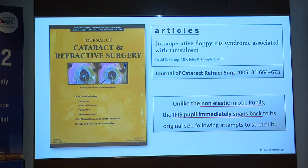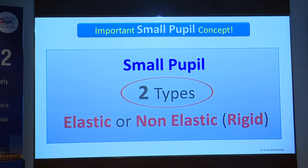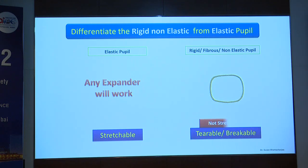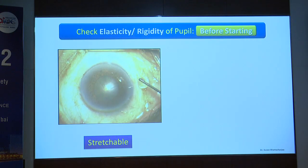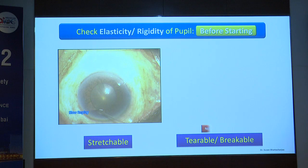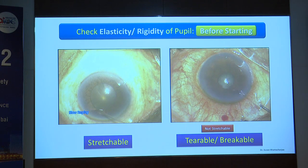Small pupils are of two types — elastic or non-elastic. The elastic pupil is like a rubber band: stretch it and any device will work. The rigid or non-elastic pupil is like a string: it won't stretch, you need to tear it. You can assess the nature of the pupil before starting: after making the paracentesis, inject BSS to inflate the anterior chamber — if you get momentary expansion it's elastic; if it doesn't budge, it's rigid. You need to tear a rigid pupil about 5mm to get a good cosmetic round pupil postoperatively without too much glare.